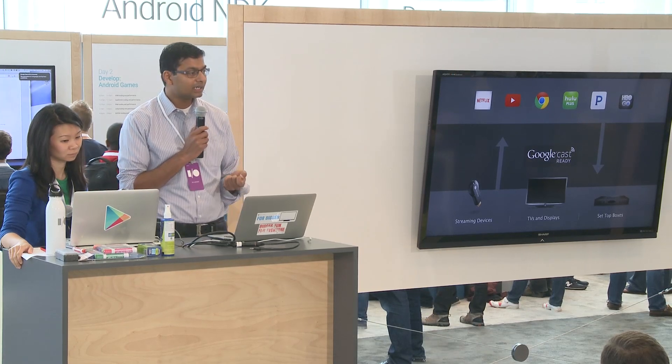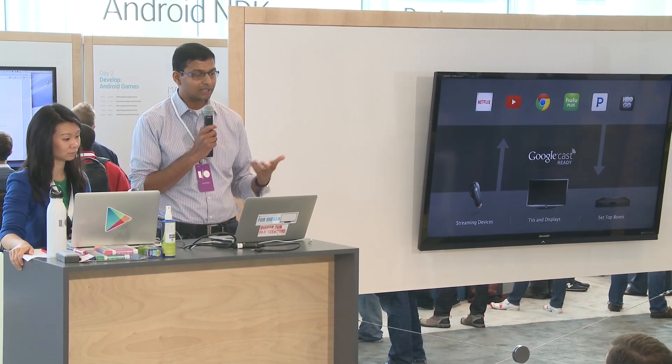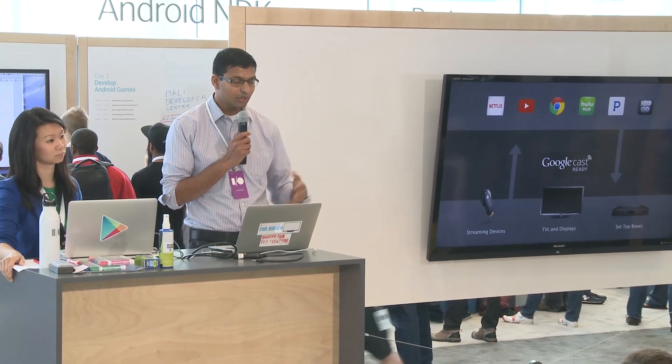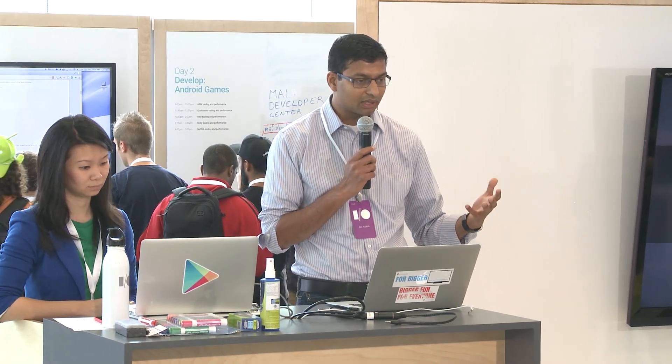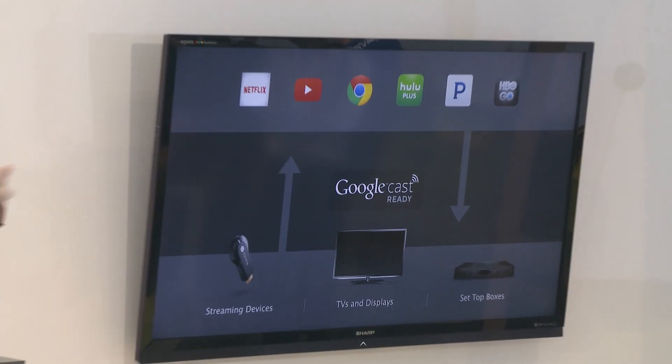The basic idea is that you're leveraging the interaction model that you're already used to on phones, tablets, and PCs — the keyboards and touchscreen you're used to — to interact. But you're still able to use the power of a big screen and powerful speaker in your living room. As a developer, you don't have to write an application from scratch for a TV display. You don't have to create a new D-pad interaction model or think about information density. You can just leverage the apps you already have and use the TV for displaying information and creating sound.